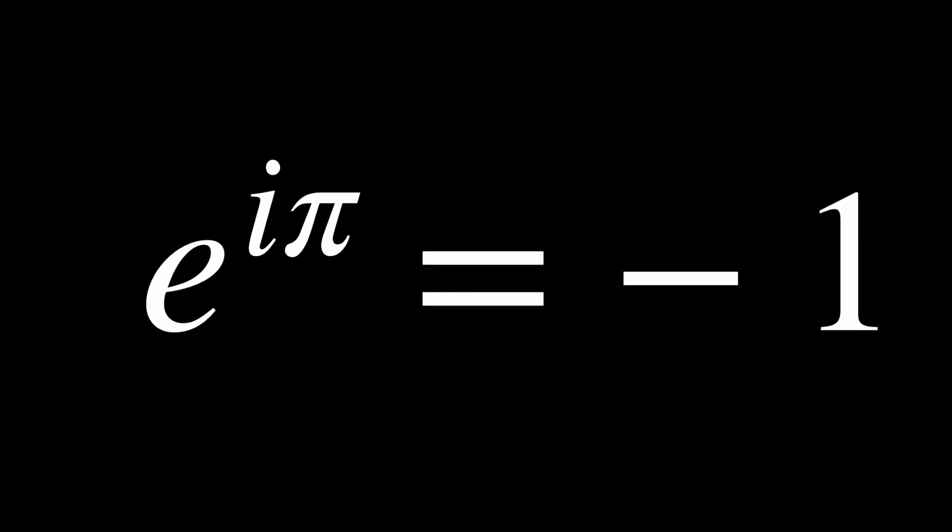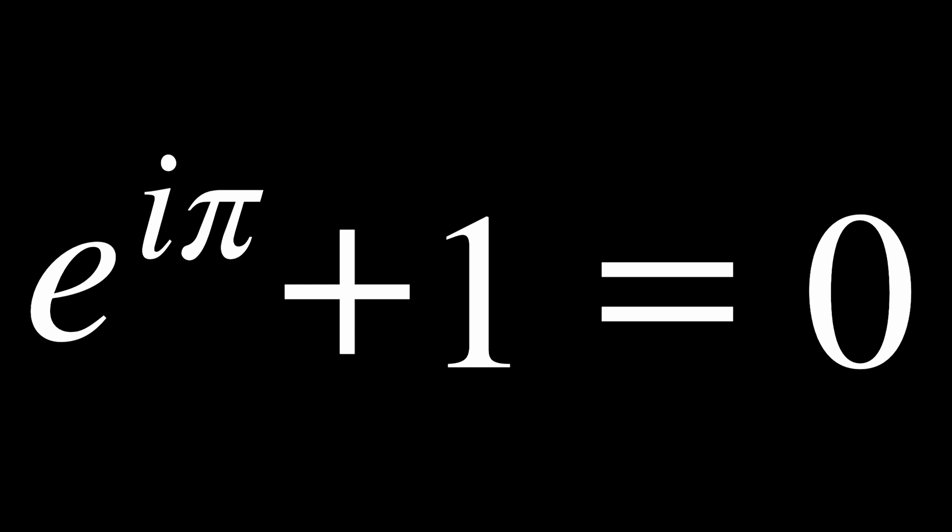Let's try another example, negative 1. The absolute value of negative 1 is 1. The angle negative 1 makes with the real axis is pi, so we get that e to the i pi is equal to negative 1. If we add 1 to both sides, we get that e to the i pi plus 1 is equal to 0. This equation is known as Euler's identity. This is often called the most beautiful equation in math. It relates some of the most famous numbers from math into just one equation.